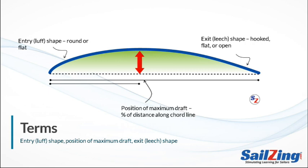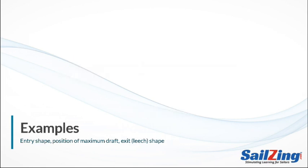Position of maximum draft refers to the location of the deepest part of the sail. We measure it as a percentage of the distance along the cord line. This sail has its maximum draft about 45% of the distance from the luff to the leech — we would say the draft is 45% aft. Here are some examples; note that the differences between sails can be subtle.